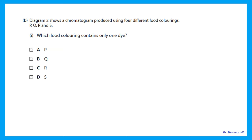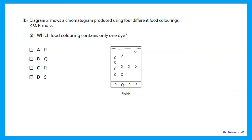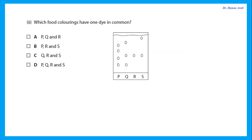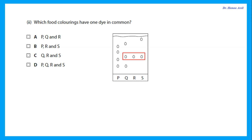Diagram 2 shows the chromatogram produced using four different food colorings: P, Q, R, and S. Which food coloring contains only one dye? To determine which one contains only one dye, we're looking for the one that went up to give only one spot — that is R. Which food colorings have one dye in common? One dye in common means they should all have spots at the same height. If the spots go up the same height, they are the same dye. So Q, R, and S have one dye in common.